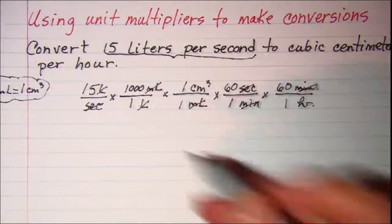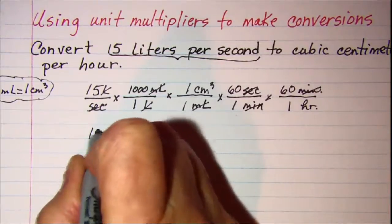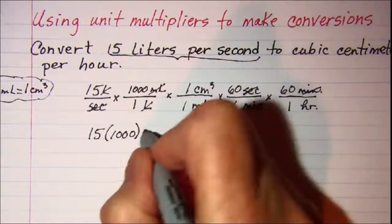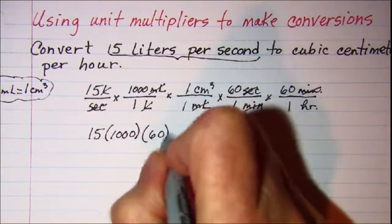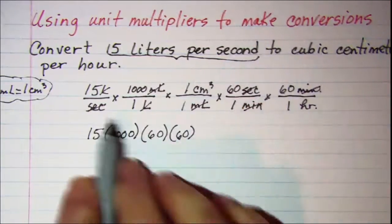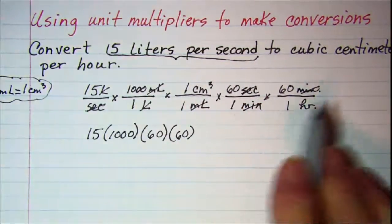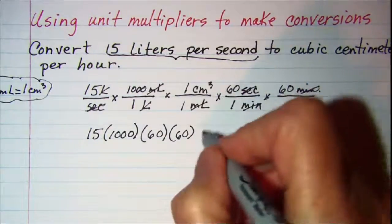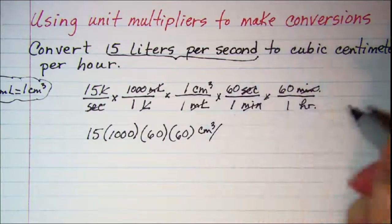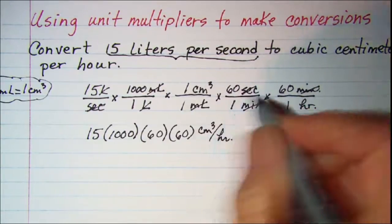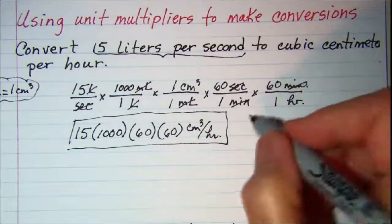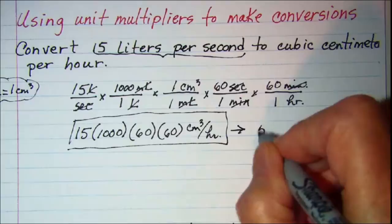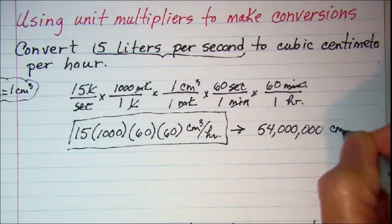I'm ready for my answer. I'll write it first in factored form: 15 times 1,000 times 60 times 60 divided by 1. This is cubic centimeters per hour. If we put this in our calculator, we get 54,000,000 cubic centimeters per hour.